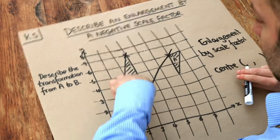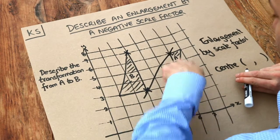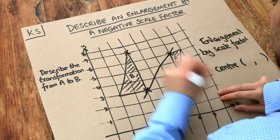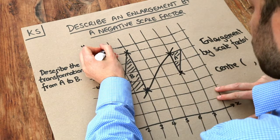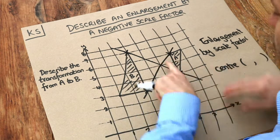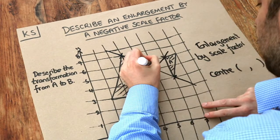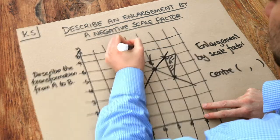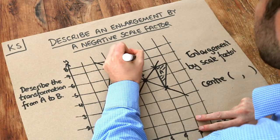And this is the pointy bit here on shape A. So I'm going to draw it here. Now if I draw a line between those as well, can you see that those two lines join up at this point? So this is our centre of enlargement. The method is no different to what we did before.